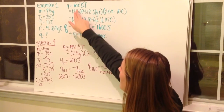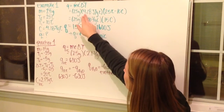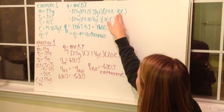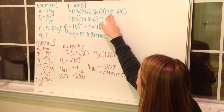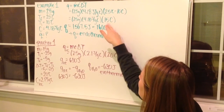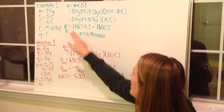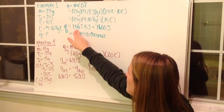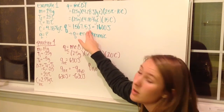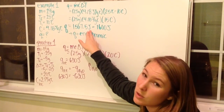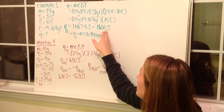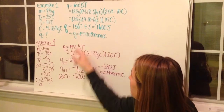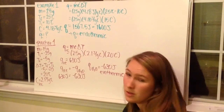I plug in M = 25, C = 4.18, and delta T = final minus initial = 25 minus 10 = 15. Multiplying the three together gives 1,567.5 joules. Using significant figures, that's 1,600 joules. I have a positive Q, therefore it is endothermic.